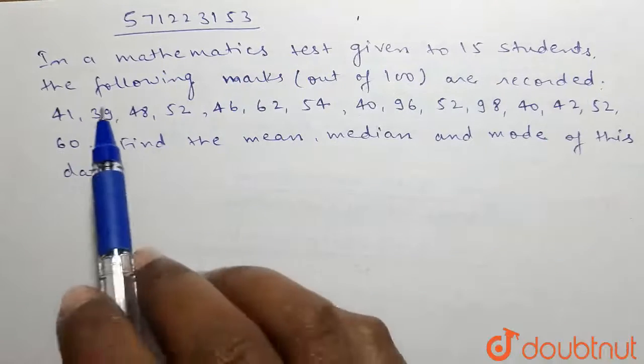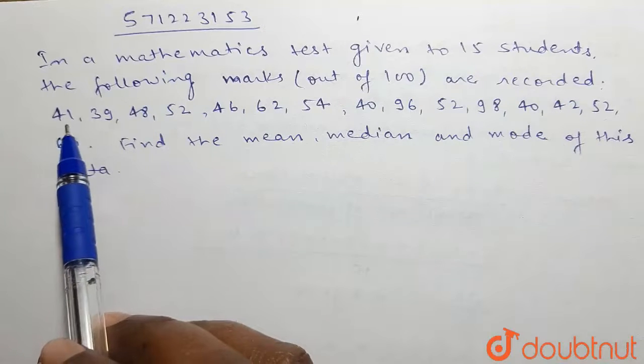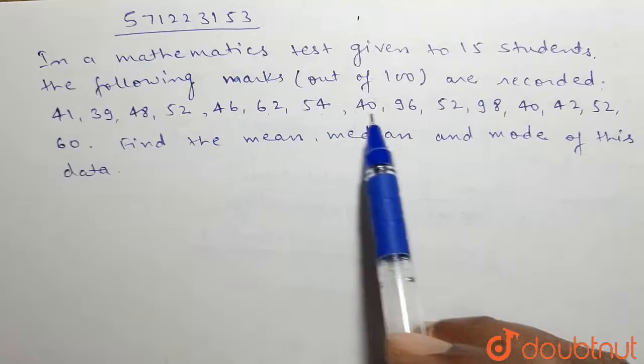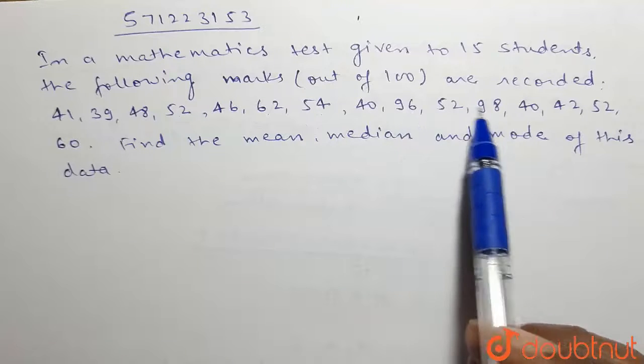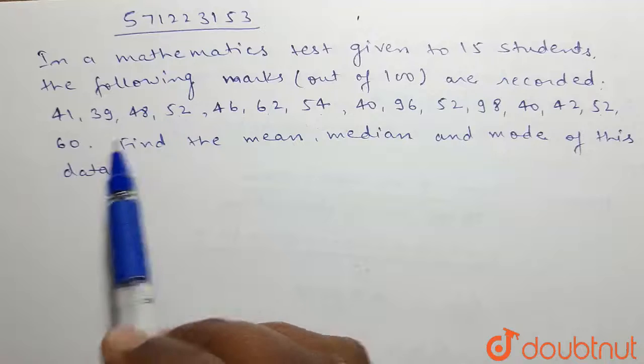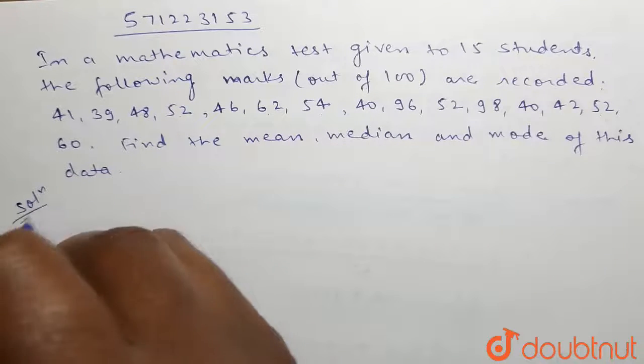The marks are: 41, 39, 48, 52, 46, 62, 54, 40, 96, 52, 98, 40, 42, 52, and 60. Find the mean, median, and mode of this data. In this question we have to find mean, median, and mode.